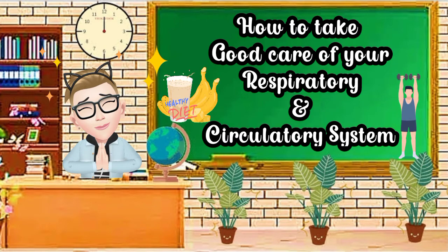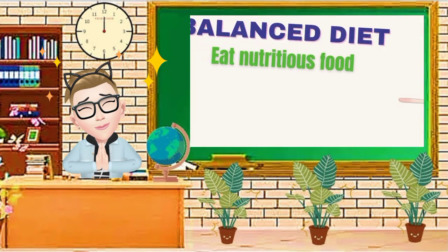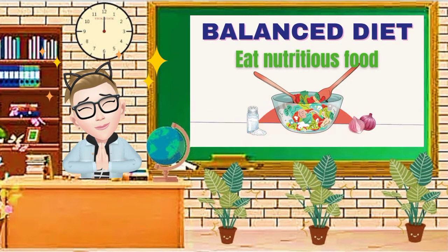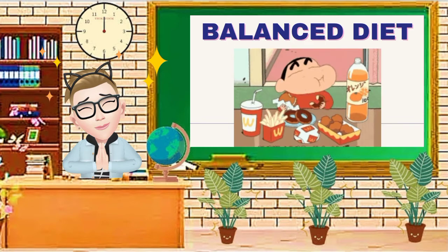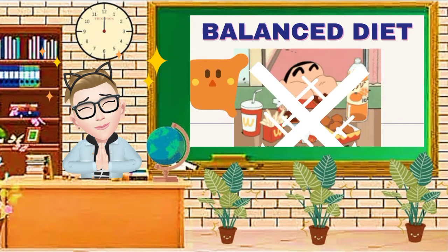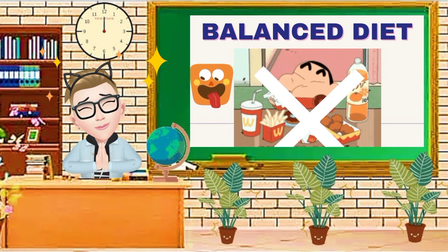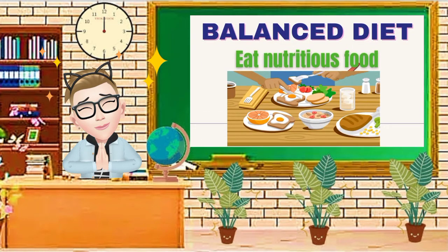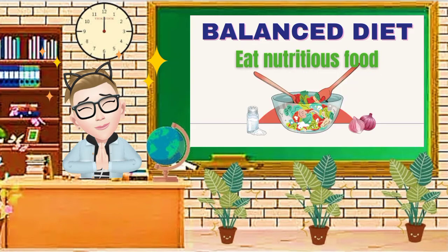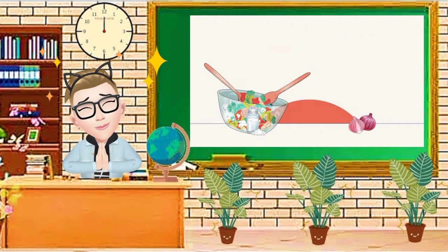Number one: balanced diet. You have to eat a variety of foods — eat nutritious foods, avoid junk foods, processed foods, carbonated drinks, and alcoholic beverages. Instead, eat a balanced diet with plenty of fruits and vegetables.